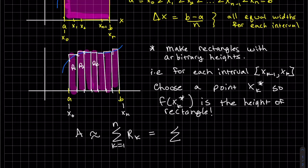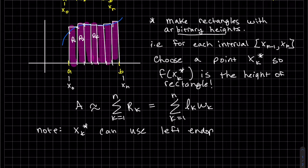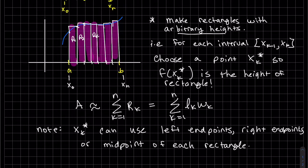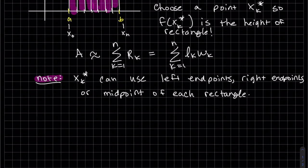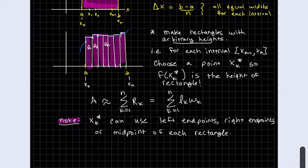The formula for the area of each rectangle is length times width. Our x_k* — the arbitrary heights — can be chosen as the left endpoints, the right endpoints, or the midpoints of each rectangle. For a better approximation, we use more rectangles, because that reduces the error.